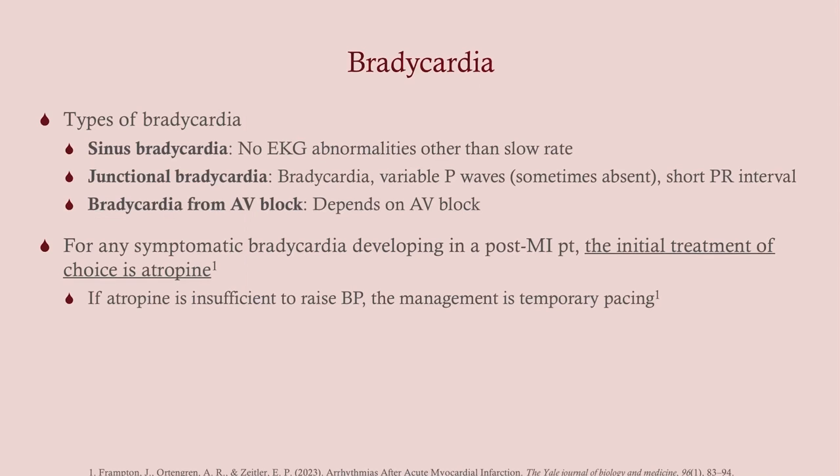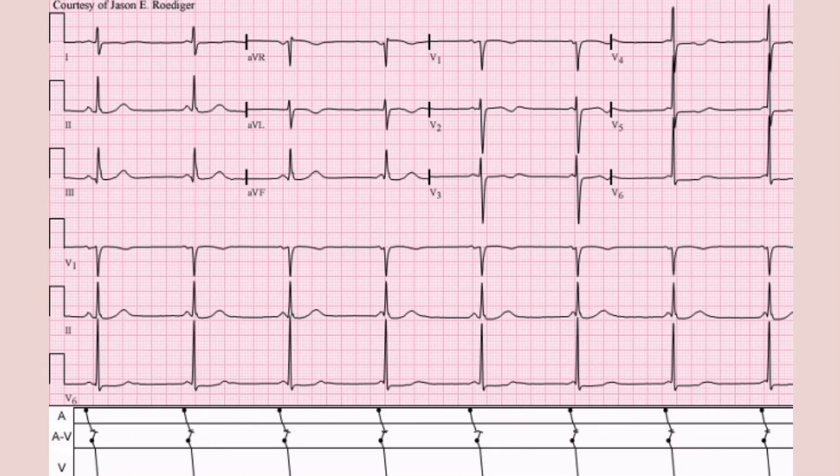Generally we don't treat patients with bradycardia unless they're symptomatic. For symptomatic bradycardia, the initial treatment is atropine. If that's not sufficient, it's pacing. Here's an EKG showing a sinus bradycardia — everything is normal other than it's a slow rhythm. To figure out the rate, use 360 divided by the number of big blocks between QRS complexes.